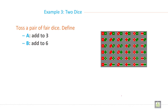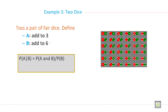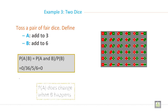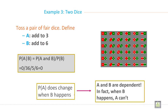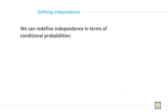Now another example. Toss a pair of fair dice and define A as sum equals 3 and B as sum equals 6. So probability of A given B equals probability of A and B divided by probability of B. That is 0/36 divided by 5/36, which equals 0. Probability of A does change when B happens, so A and B are dependent. In fact, when B happens, A cannot occur.